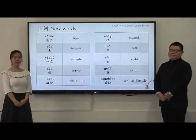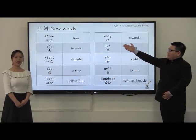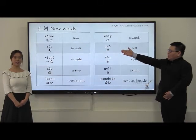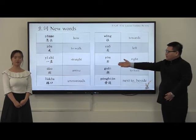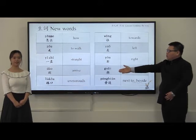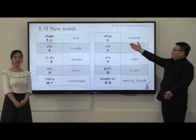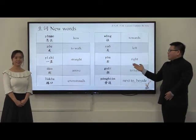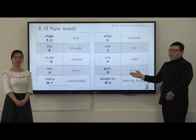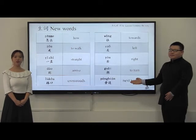请看生词。Now please look at the new words. 怎么 – How. 走 – To walk. 一直 – Straight. 到 – Arrive. 路口 – Crossroads. 往 – Towards. 左 – Left. 右 – Right. 拐 – To turn. 旁边 – Next to or beside.